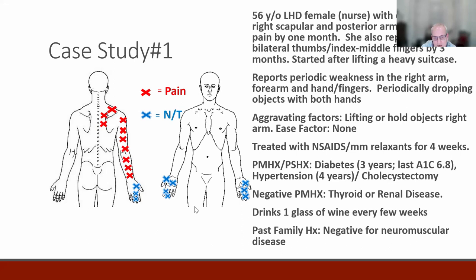Additional examination items you'd want to perform include carpal tunnel tests for the bilateral hand findings. Given the diabetes history, you'd also want to do a neurological screen in the lower extremities — checking protective sensation. In this case, the patient ended up having some peripheral neuropathy, and I ended up doing a four-limb examination including upper and lower extremities.